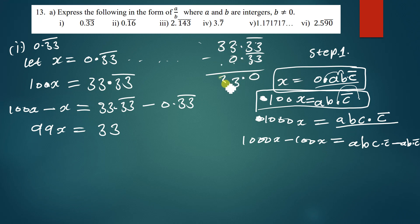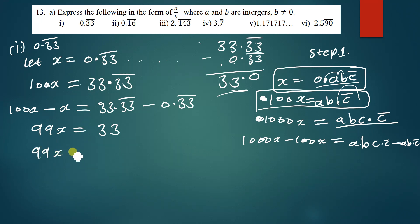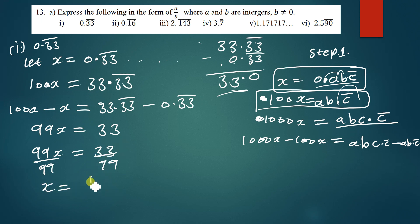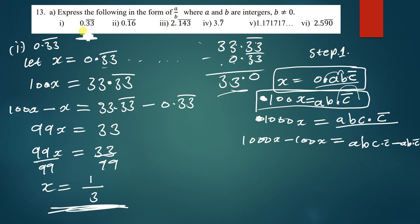So 99x = 33. Divide both sides by 99: x = 33/99. Simplifying — 33 into 33 gives 1, and 33 into 99 gives 3 — so x = 1/3. You can verify this on a calculator and you'll get 0.333... repeating.